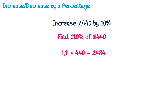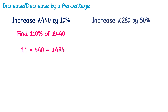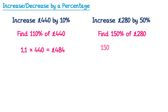This method is fast and effective with a calculator. Let's do a second example: increase £280 by 50%. Since we're increasing by 50%, we start with 100% and add 50% to get 150%. So we find 150% of £280: take 150 divided by 100, which is 1.5, then multiply by £280. Typing this into a calculator gives the right answer: £420.